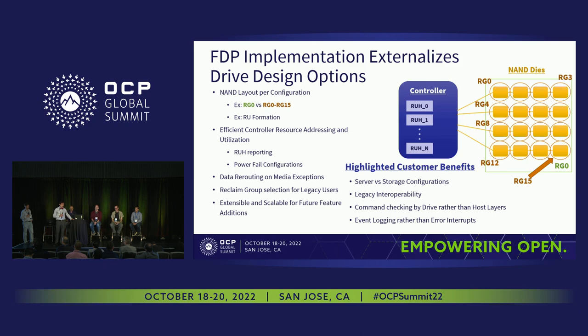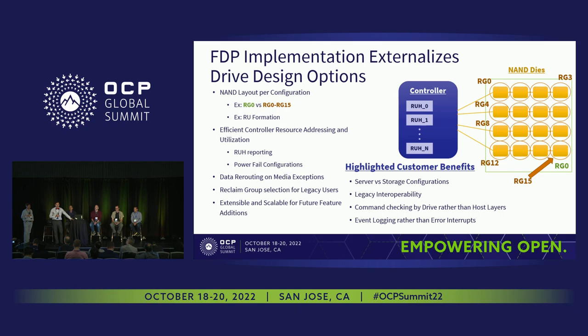In enterprise, we generally assume everything is already power-fail protected. FDP is starting to add back that maybe some FDP configurations want to be power-safe, but others don't have enough capacitors or board area for those capabilities. FDP has already standardized reporting that some configurations have a risk of data loss on power fail. When it comes to media errors on a write, FDP has an ability to reroute around media errors — the drive takes the error and continues to write the data. Later, the host can find there was an error and work with the drive, so incoming data isn't lost and the data center can continue functioning.